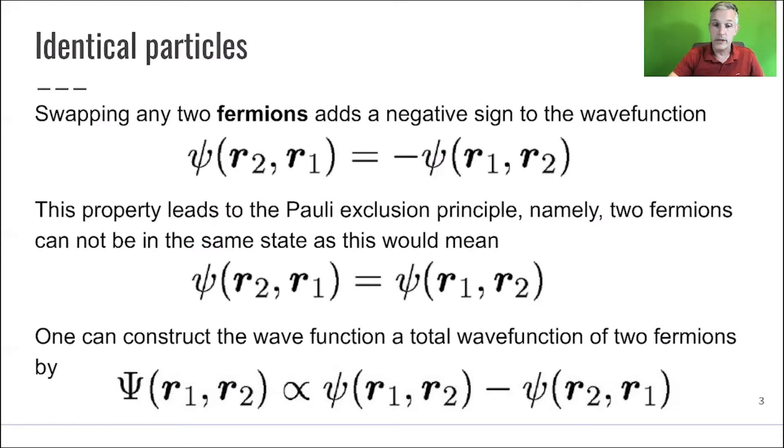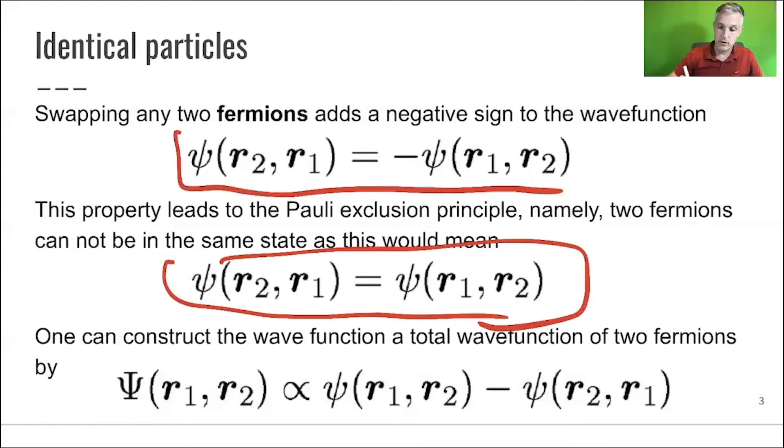This property of exchange anti-symmetry leads to a very known principle, namely the Pauli principle, which means that you cannot have two electrons of the same energy state or the same state, because then you would actually swap them. You find that they're identical, which means there's a stark contrast to the actual description of this wave function. This doesn't really work. And therefore, two electrons or fermions cannot be in the same state in very general.